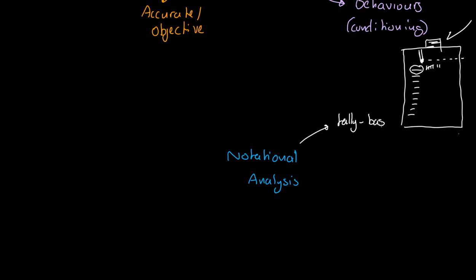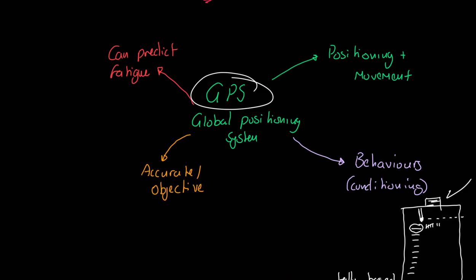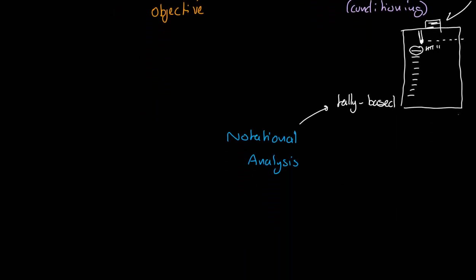Notational analysis is a really useful tool. It's tally-based—how often does somebody do something. If you're also tracking GPS and hitting that button at a particular moment, you could know not only what they did but where they were. The idea is you go through a process of identifying trends—someone's pass completion ratios, conversion ratios of shots to goals or baskets.